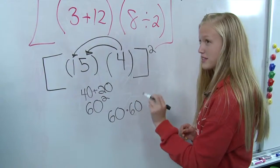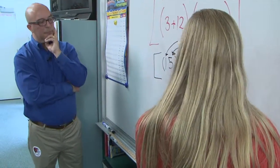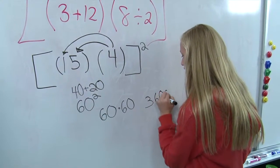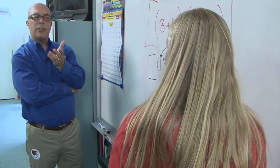So you would do, well, 6 times 6 is 36, and you add the two zeros back. Perfect. So it's 3,600. How come it's not 120?